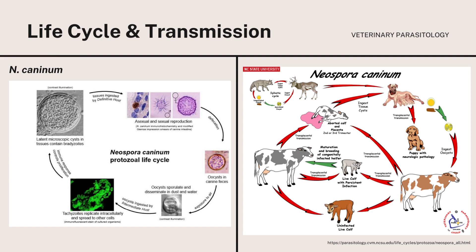Dogs are the definitive host of Neospora caninum and are capable of shedding oocysts in feces after eating tissues of infected animals. It has a heteroxenous life cycle with a sexually reproductive stage occurring in the intestine of a definitive host. After ingestion of an oocyst, motile and rapidly dividing tachyzoites are released. These tachyzoites disseminate throughout the host and, in response to the host immune response, differentiate into bradyzoites, which form cysts in muscle and tissue. The formation of these cysts results in chronic infection of the intermediate host. Ingestion of infected intermediate host tissue by the definitive host completes the life cycle of Neospora caninum.